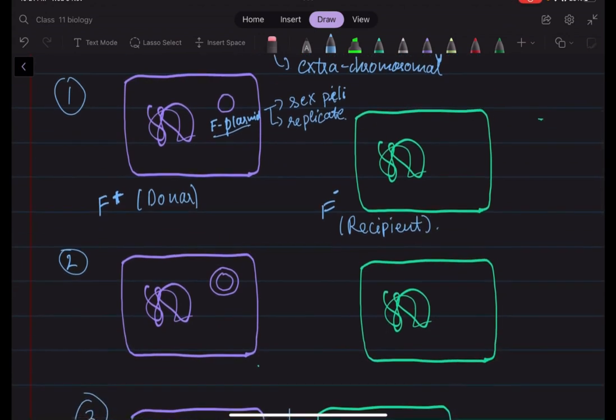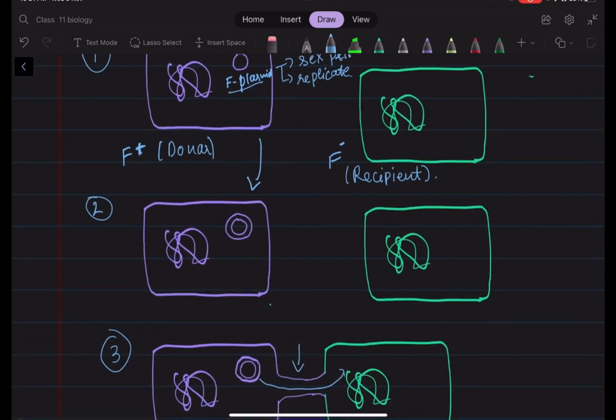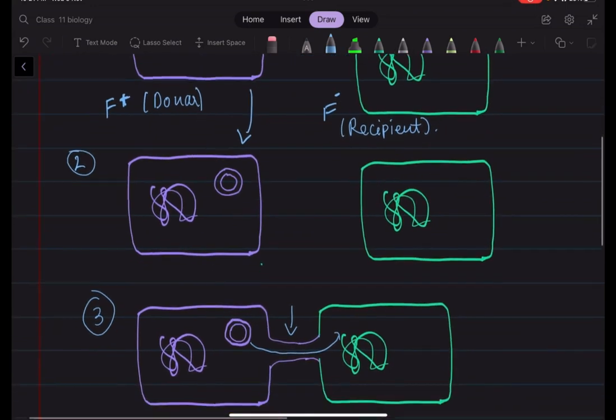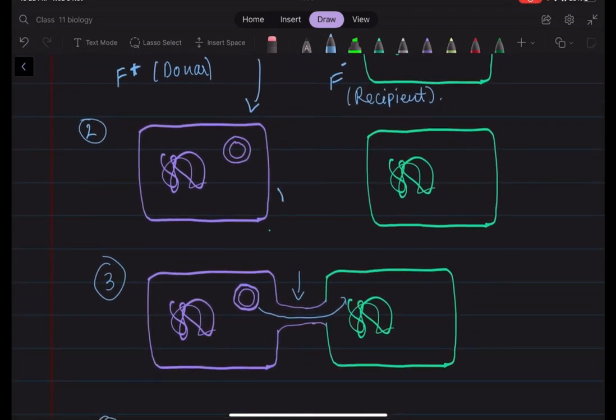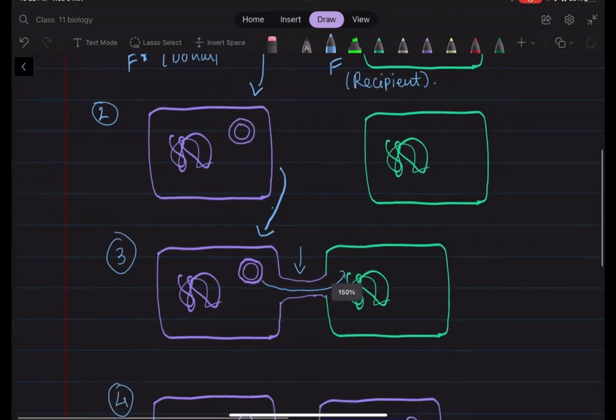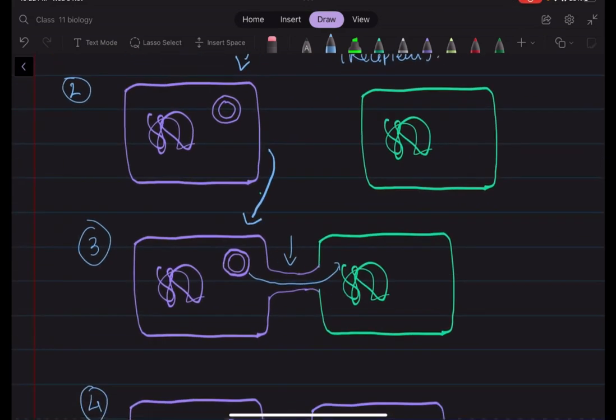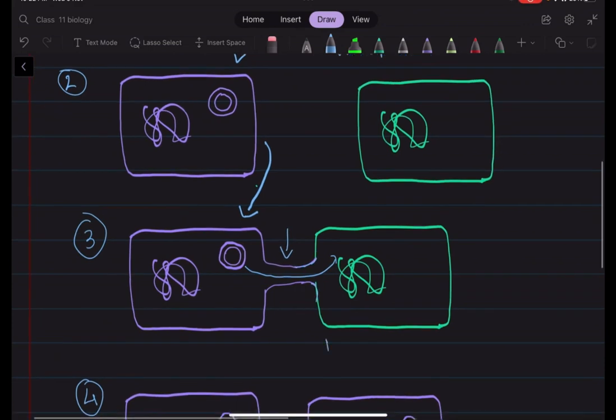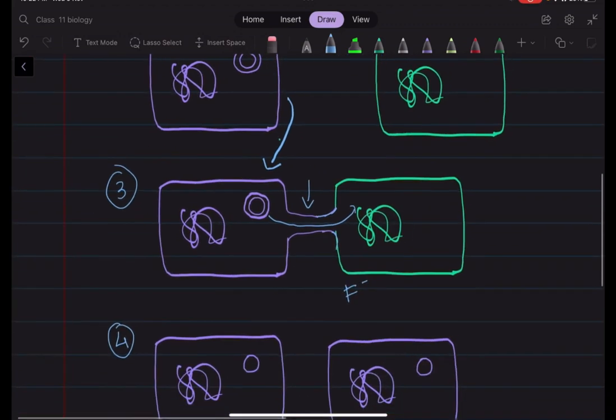So as I told you, this is capable of replicating itself. So in the next stage, it replicates itself. After replication, since it also has the ability to form a sex pili, it forms a sex pili which attaches itself to the other bacteria, that is the F-, the recipient bacteria.